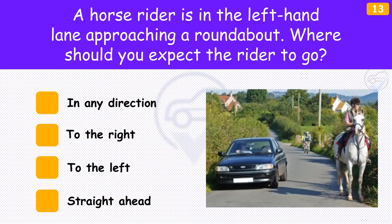A horse rider is in the left-hand lane approaching a roundabout. Where should you expect the rider to go? The answer is 'In any direction'. Horses and their riders move more slowly than other road users. They might not have time to cut across heavy traffic to take up a position in the right-hand lane. For this reason, a horse and rider may approach a roundabout in the left-hand lane even though they're turning right.